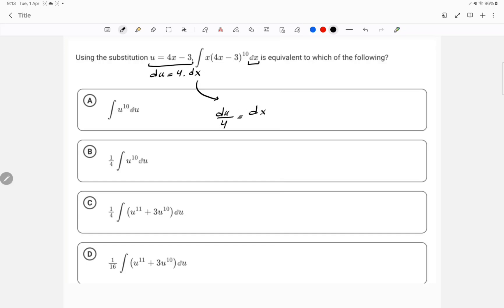But now the issue is that here I have an x which I have to replace. So, look, if u is equal to 4x minus 3, then 4x is equal to u plus 3, then x is equal to u plus 3 over 4.